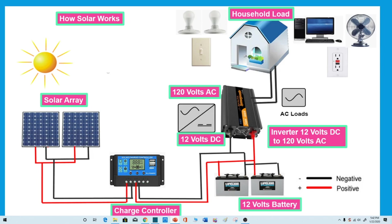Direct current (DC) is a continuous flow of electricity through a conductor such as a wire. Alternating current (AC) is an electric current that reverses its direction many times a second at a regular interval, and is typically used in our homes.